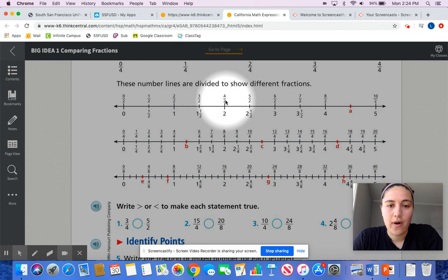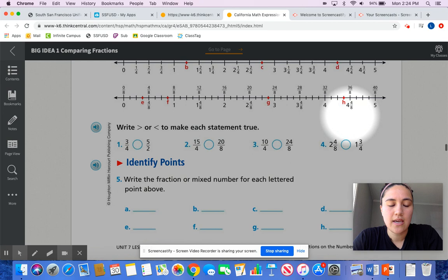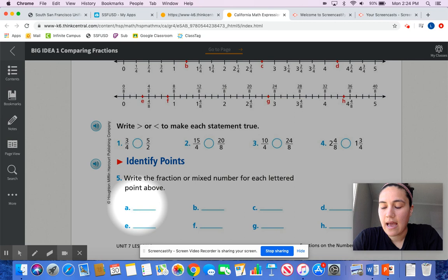Then we have a blank right here, and we have 10 halves. So what would this blank here be? Well, I look and I see 8 halves is here, and I see 10 halves is here, so this blank would be 9 halves. Then down here where it says identify points, where I see the A, I'm going to write 9 halves, because that's what goes on the number line right here.